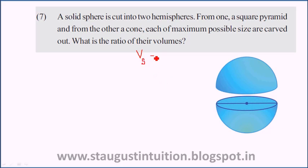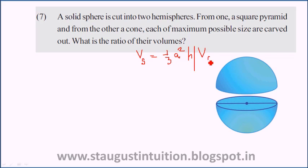The volume of a square pyramid is equal to (1/3)a²h. In the case of a cone, the volume of a cone is equal to (1/3)πr²h. This is the basic idea.